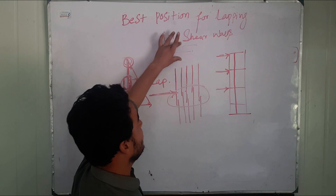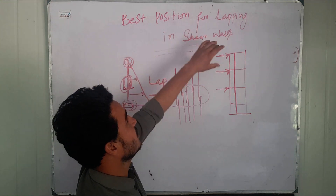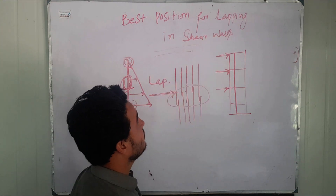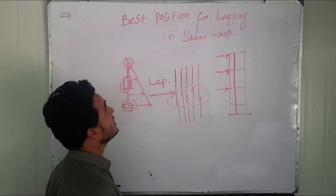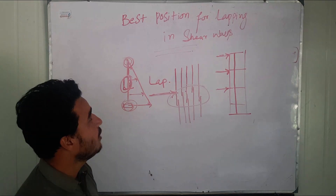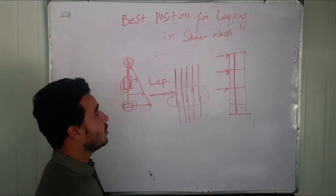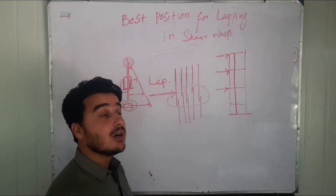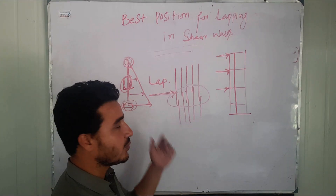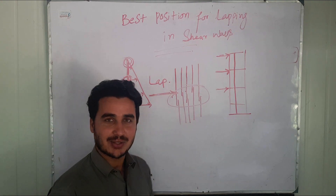This is how you can control the weakening of the shear wall and the lateral moment of the high-rise building. This was a short video about the best lapping zone for shear walls. I hope you have learned something. You can ask your questions in the comments. Thank you.